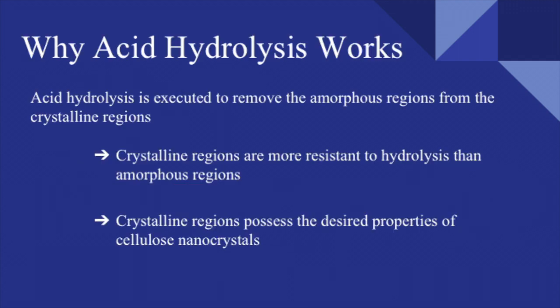Acid hydrolysis is executed to remove the amorphous regions from the crystalline regions. Why does acid hydrolysis work? The crystalline regions are more resistant to hydrolysis than the amorphous regions. This is important due to the crystalline regions possessing the desired properties of cellulose nanocrystals.